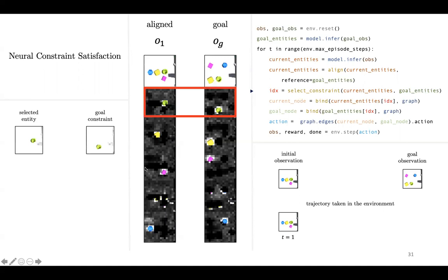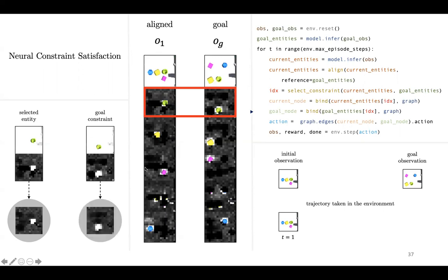We select an entity to effect, bind the entity at this index to a node in the graph. And this is the attention mask for the selected entity. This is the attention mask for the abstract node in the graph. We do the same thing for the goal constraint. We bind the goal constraint at this index to a node in the graph. This is the attention mask for the selected constraint. This is the attention mask for the abstract node in the graph. And the edge between the two nodes is tagged with the action that causes the transition between one node to another.